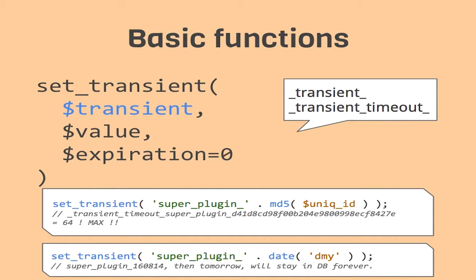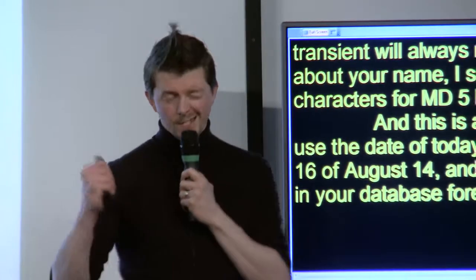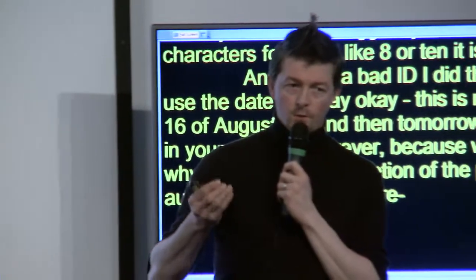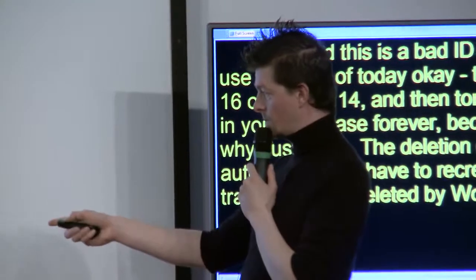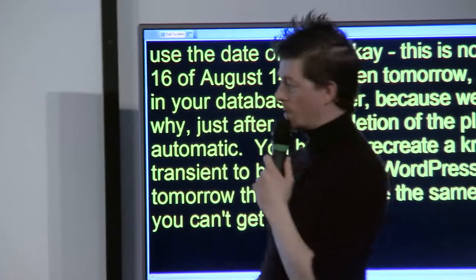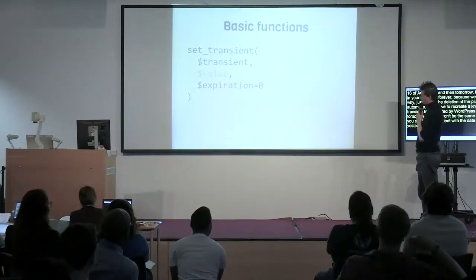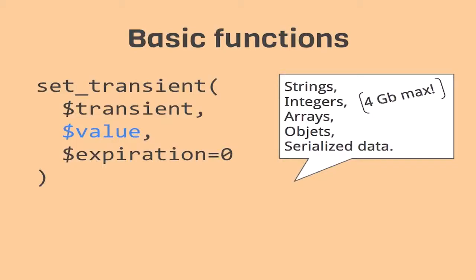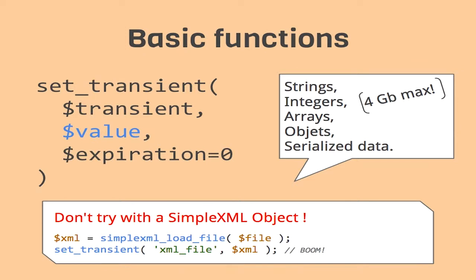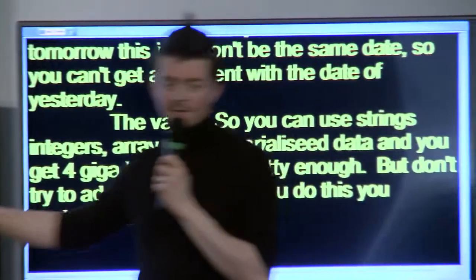And this is a bad idea - I did that myself. If you use the date of today in the transient name, like '16 August 14', then tomorrow it will stay in your database forever, because the deletion is not automatic. You have to request a known transient name for WordPress to delete it. But tomorrow it won't be the same date, so you can't get a transient with yesterday's date. For the value, you can use strings, integers, arrays, objects, serialized data, and you get up to 4 gigabytes of data. But don't try to add a SimpleXML object directly - you'll explode your development.